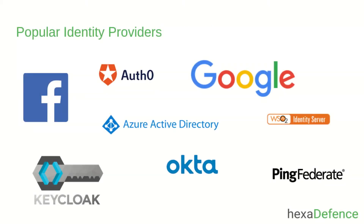Here I have included a few popular identity providers. Google and Facebook are social identity providers. Auth0, Okta, and Azure Active Directory can be introduced as cloud identity providers. WSO2 Identity Server, PingFederate, and Keycloak can be introduced as on-premises identity providers. In addition to these, there exist many more IDPs, which you can find on the internet.